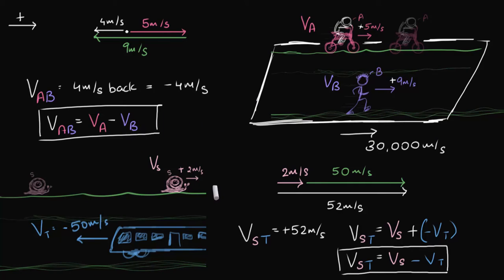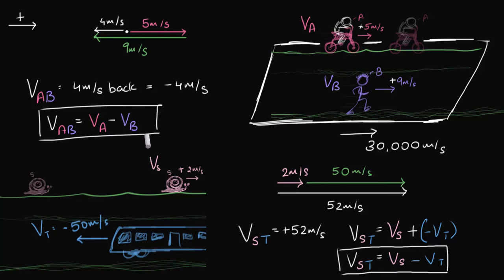To summarize, this is the general formula to calculate relative velocity between any two objects. When using the formula, make sure of two things: first, use proper signs — velocities are sign-sensitive. And second, make sure VA and VB (or Vs and Vt) are velocities with respect to some common reference frame. It doesn't have to be ground — it can be a platform, a river, or air — but it must be a common reference frame.